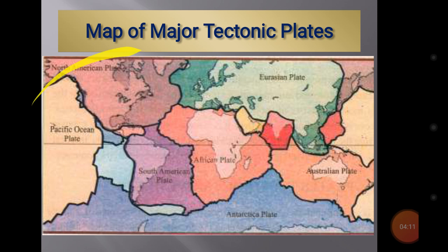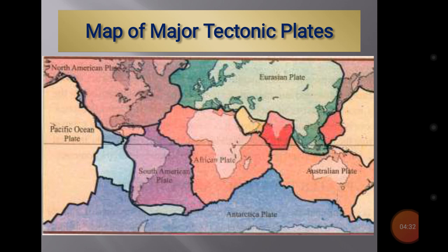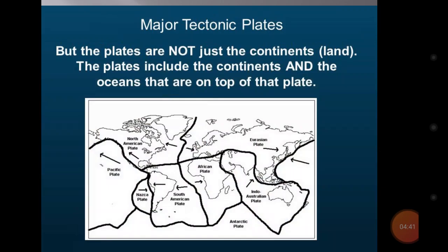This map shows where each plate is located. This is the North American plate. The black lines you are seeing here separate each plate from the other. Here is the Eurasian plate, which covers two continents — Europe and Asia.